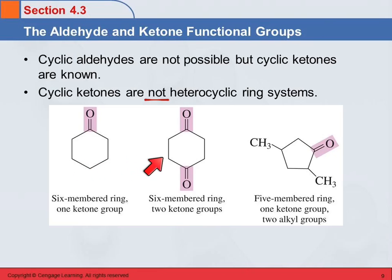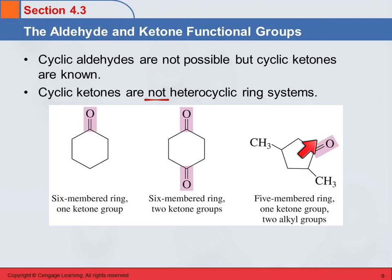This example has two ketone groups: here's a five-membered ring with a ketone group and two methyl groups on it.